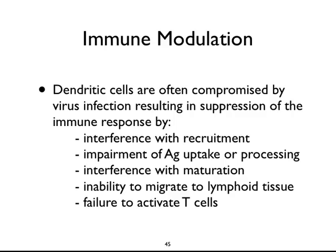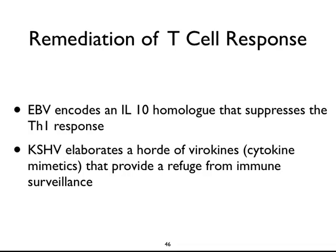Viruses also have ways of directly inhibiting T cells. Epstein-Barr virus, a large herpes virus that infects about 85% of you, encodes a homologue of IL-10 — a cytokine that suppresses the TH1 response. If you suppress TH1, you suppress elaboration of that cytokine, and as a result EBV goes undetected in the infected cell. Kaposi's sarcoma herpes virus elaborates a horde of viral cytokines — cytokine mimetics that were probably all genes captured from the host. These provide a refuge from immune surveillance because it appears as though the cell is not infected to the host.